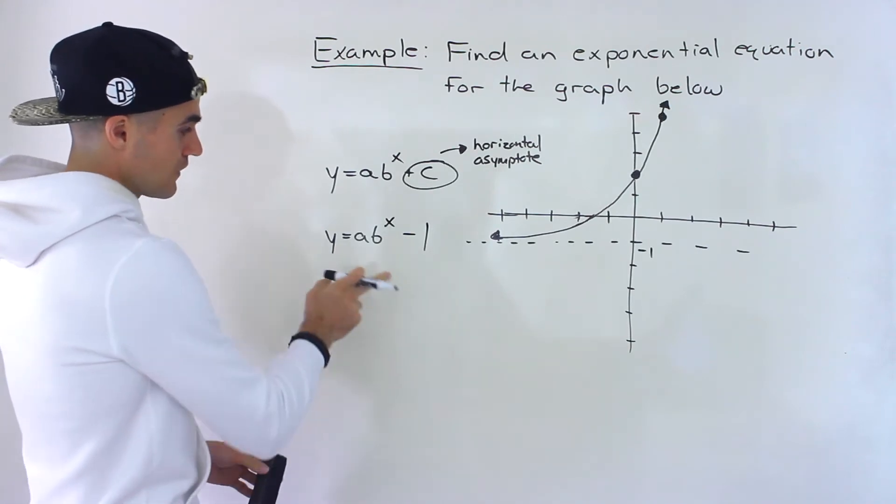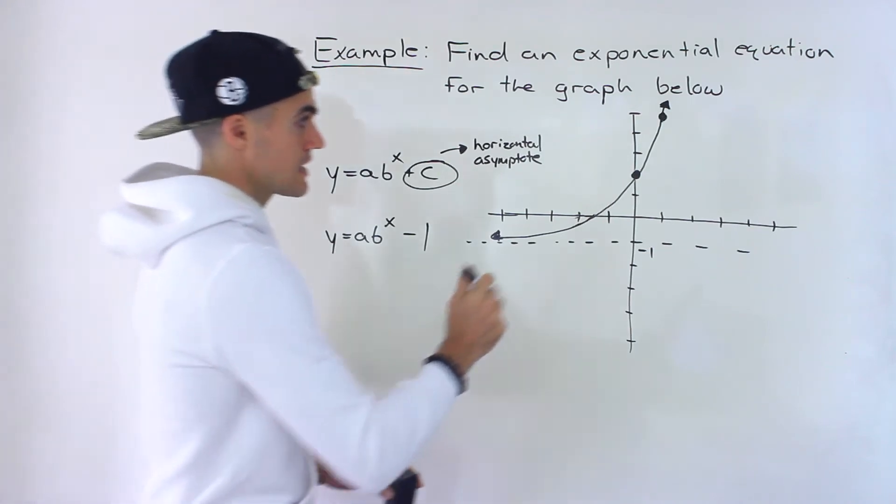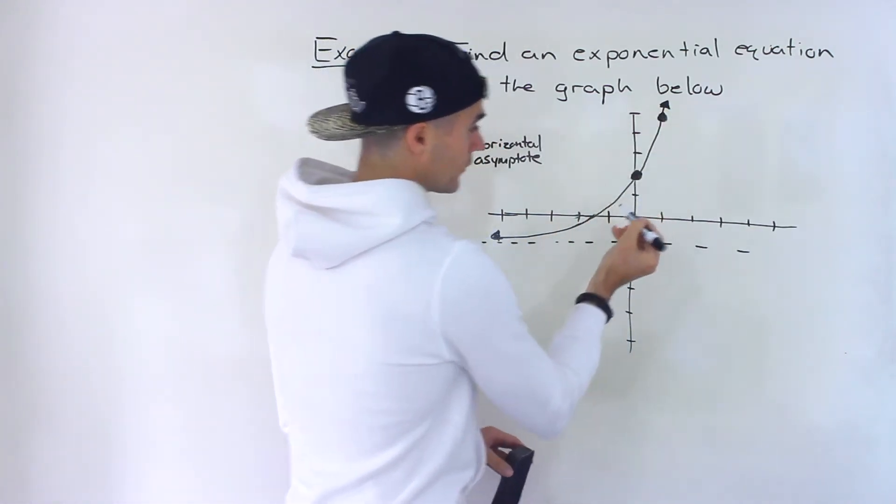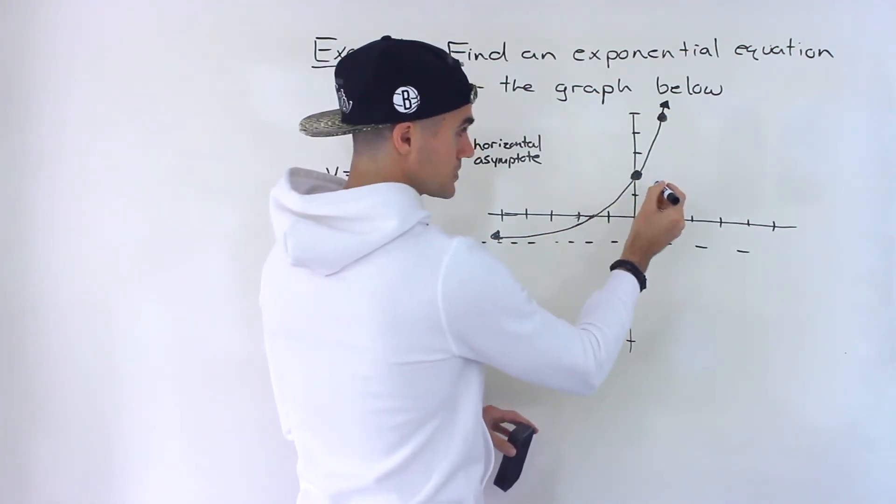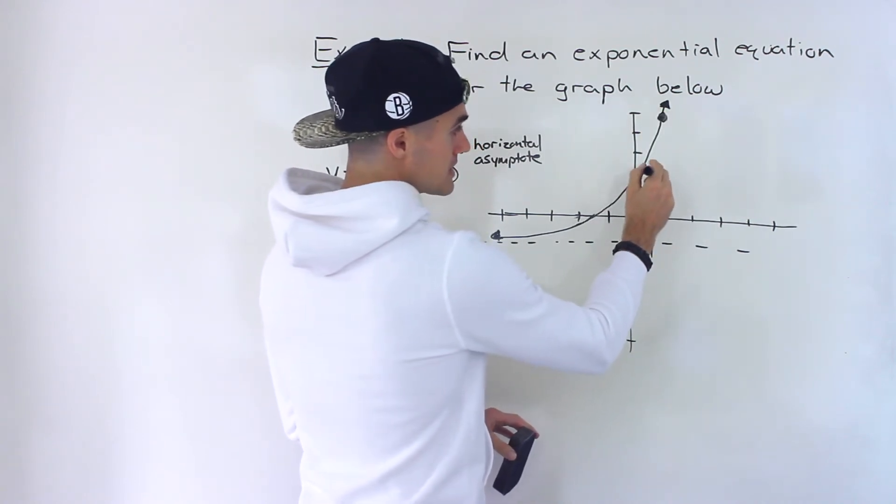Now what we have to find is the a and the b value, and what you want to do is pick some points. Notice that we have two points. I made these pretty obvious on the graph. Sometimes they're not going to be obvious. Sometimes you're going to have to look for these kinds of points. They're not going to be shaded in like this, but in this case they are.